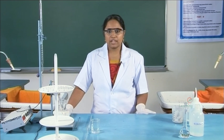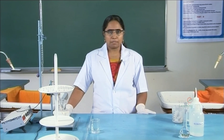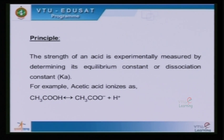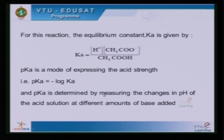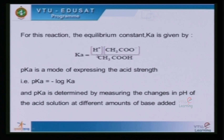For example, acetic acid ionizes as CH3COOH → CH3COO⁻ + H⁺. For this reaction, the equilibrium constant Ka is given by: Ka = [H⁺][CH3COO⁻] / [CH3COOH], that is, the concentration of H⁺ ions times the concentration of CH3COO⁻ ions, divided by the concentration of acetic acid.